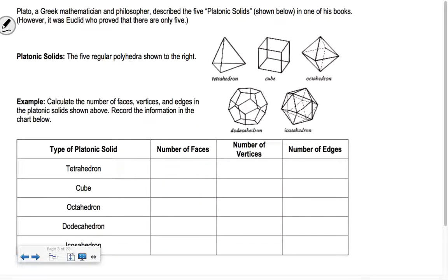Plato was a Greek mathematician and philosopher, and he described the five platonic solids — they're named after him. These five solids are shown below, and there are only five of them. The platonic solids are the five regular polyhedra. Regular means all the sides are the same length and all the angles are congruent, so a regular polyhedron has all regular polygon faces.